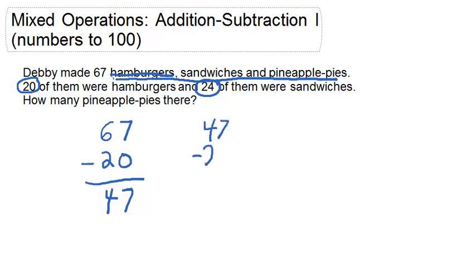So if we subtract 24 from 47, because that's how many are left now, we know that 23 have to be pineapple pies, because we've taken away both the hamburgers and sandwiches from the 67 items.